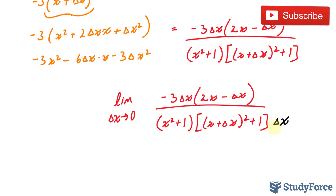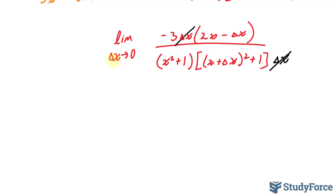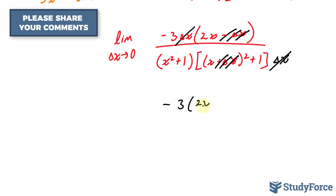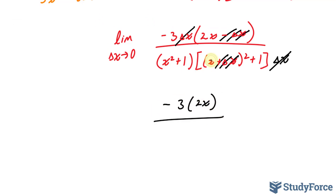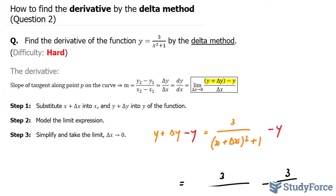Now I can cancel this delta x with this delta x, and take the limit as delta x approaches 0. The delta x in the denominator goes to 0, and the delta x in the numerator also goes to 0, leaving me with negative 3 times 2x over x squared plus 1, all squared. Therefore, dy over dx is equal to negative 6x over x squared plus 1 to the power of 2. And that is how to find the derivative by the delta method.